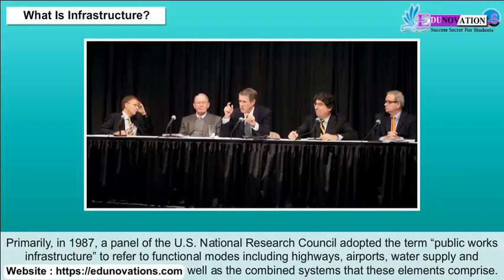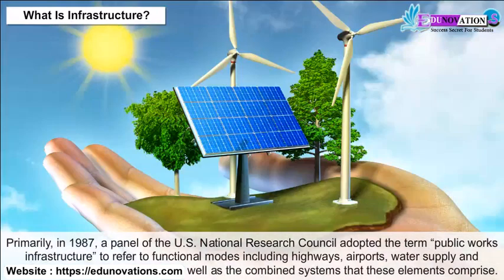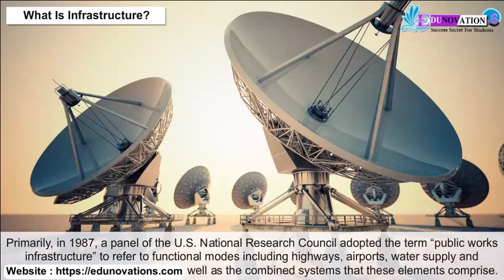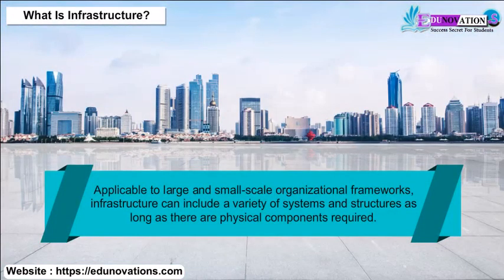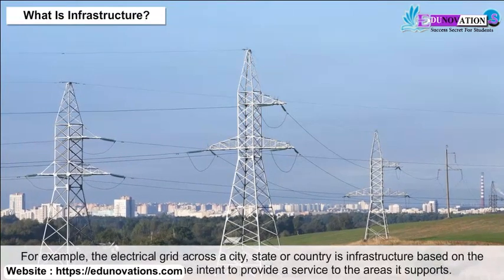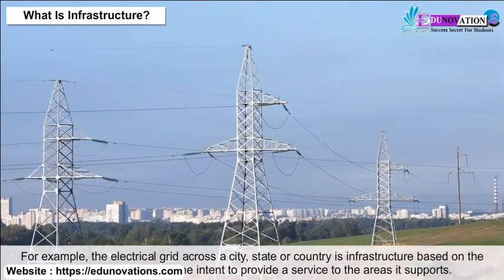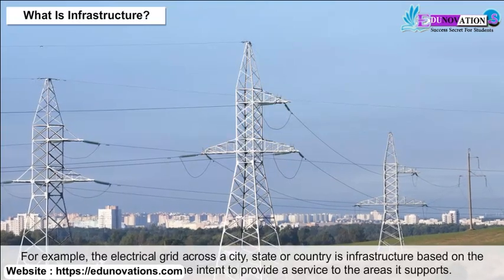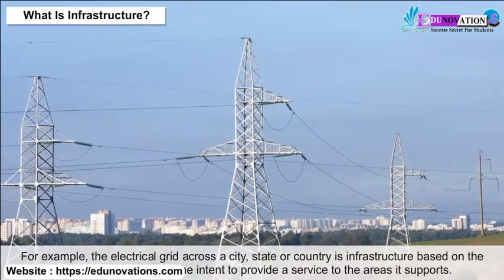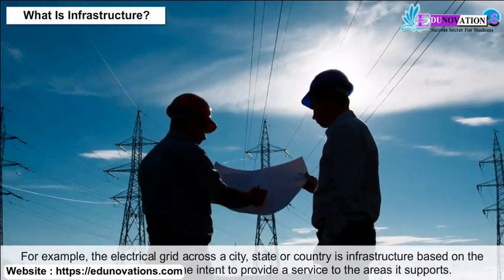The U.S. National Research Council used the term to refer to functional modes including highways, airports, water supply and resources, and telecommunications, as well as the combined system these elements comprise. Applicable to large and small-scale organizational frameworks, infrastructure can include a variety of systems and structures as long as there are physical components required. For example, the electrical grid across a city, state or country is infrastructure based on the equipment involved and the intent to provide a service.